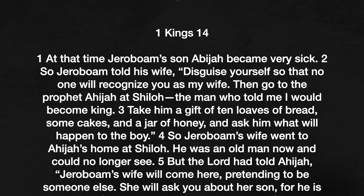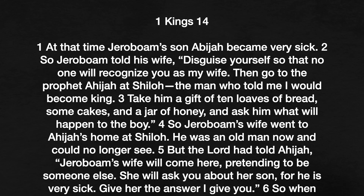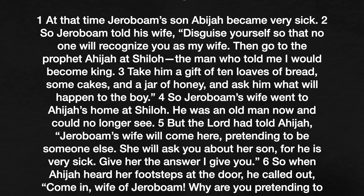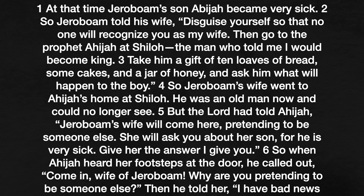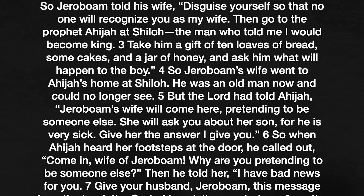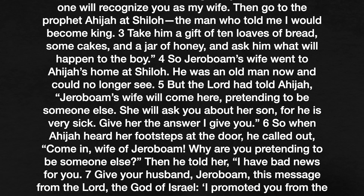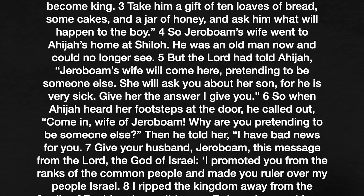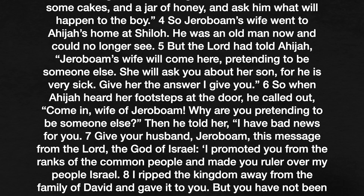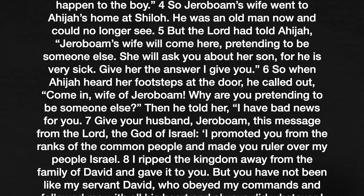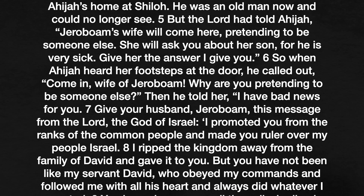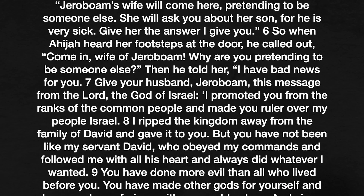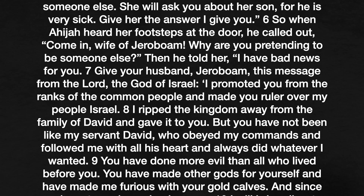1 Kings 14 to 16, New Living Translation. 1 Kings 14: At that time, Jeroboam's son Ahijah became very sick. So Jeroboam told his wife, 'Disguise yourself so that no one will recognize you as my wife. Then go to the prophet Ahijah at Shiloh — the man who told me I would become king. Take him a gift of ten loaves of bread, some cakes, and a jar of honey, and ask him what will happen to the boy.' So Jeroboam's wife went to Ahijah's home at Shiloh. He was an old man now and could no longer see. But the Lord told Ahijah, 'Jeroboam's wife will come here, pretending to be someone else. She will ask you about her son, for he is very sick. Give her the answer I gave you.' So when Ahijah heard her footsteps at the door, he called out, 'Come in, wife of Jeroboam.'